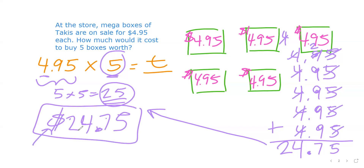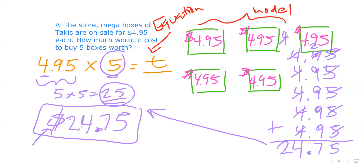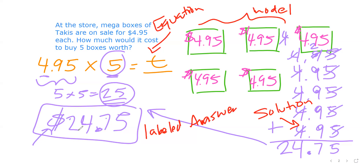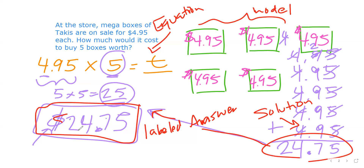With money, the dollar symbol works as a label. Looking at the steps we use for word problems: we have a model, we have an equation, we have a solution — that's just the math work — and then we have a labeled answer. Notice the labeled answer is different from the solution: I rewrite the numerical result somewhere else and put a label next to it. That is the proper way of doing it.